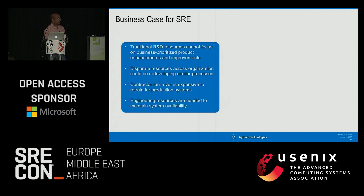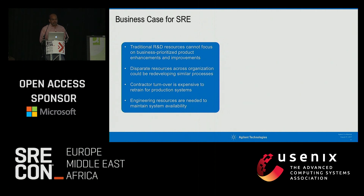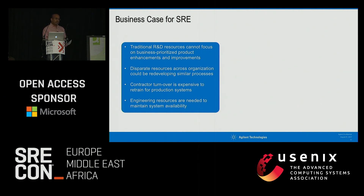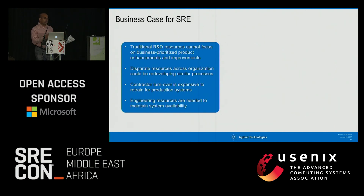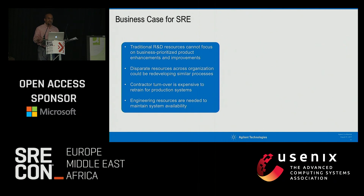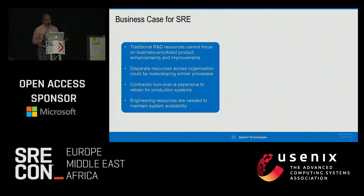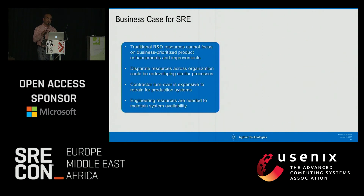As we're evolving, we'll be introducing things like error budgets to understand where you start and stop. But generally, if you're building your product you can't also be monitoring it in the same way. I also learned that disparate resources across the organization could be doing similar things — not everyone should be creating their own monitoring tool or logging server. There's efficiency to be gained by working across a matrixed, 12,000-person organization spread across 40 countries.